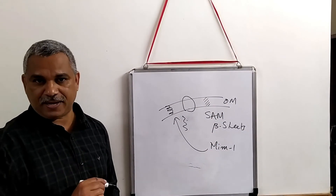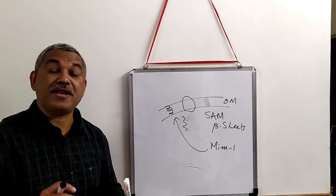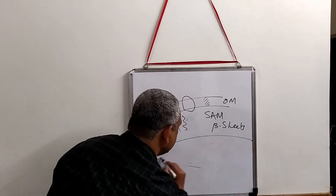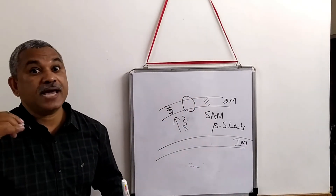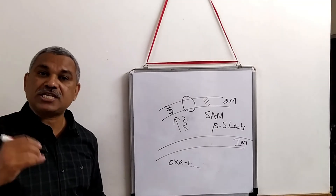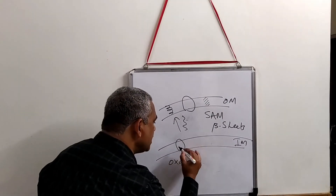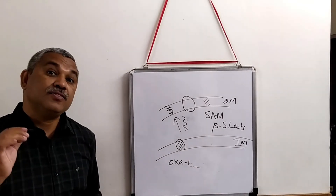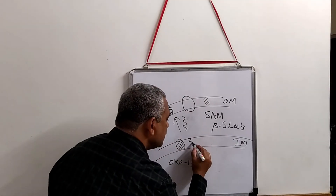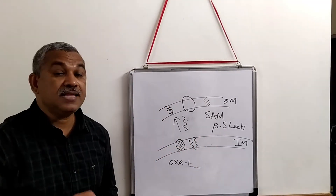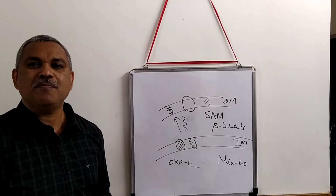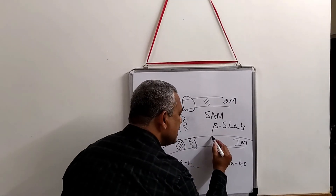What about proteins meant for the inner mitochondrial membrane? There are certain proteins like OXA1. OXA1 will help a protein meant for the inner mitochondrial membrane to be inserted inside. Other than OXA1, there is another protein called MIA40 — MIA40 also helps in integrating proteins into the inner mitochondrial membrane.